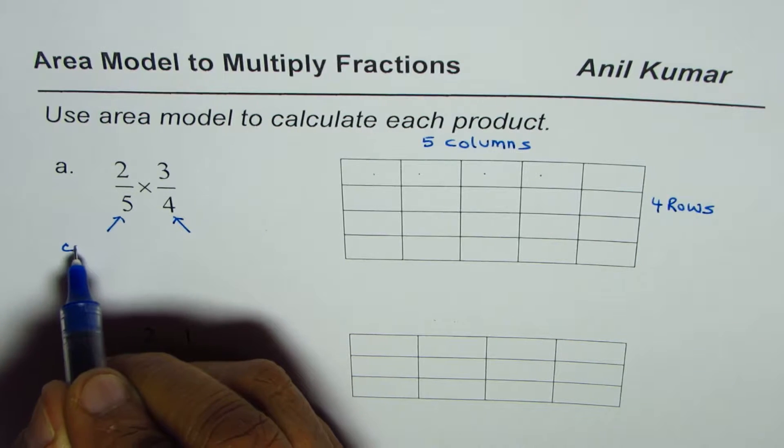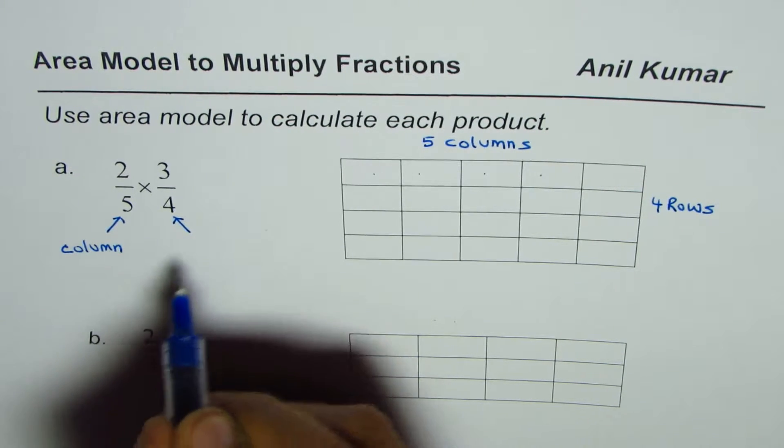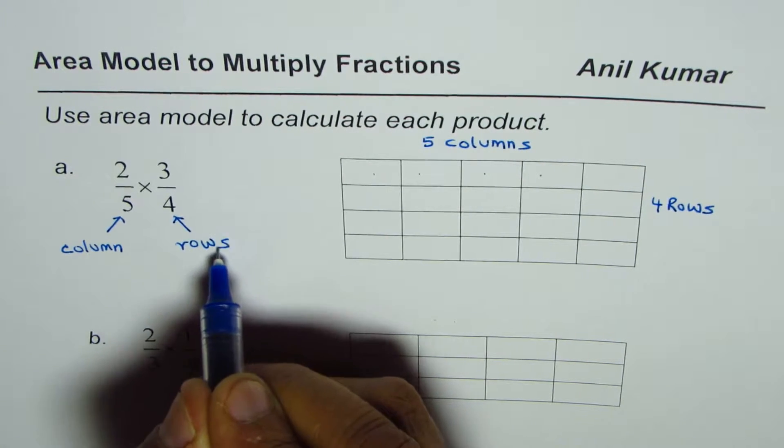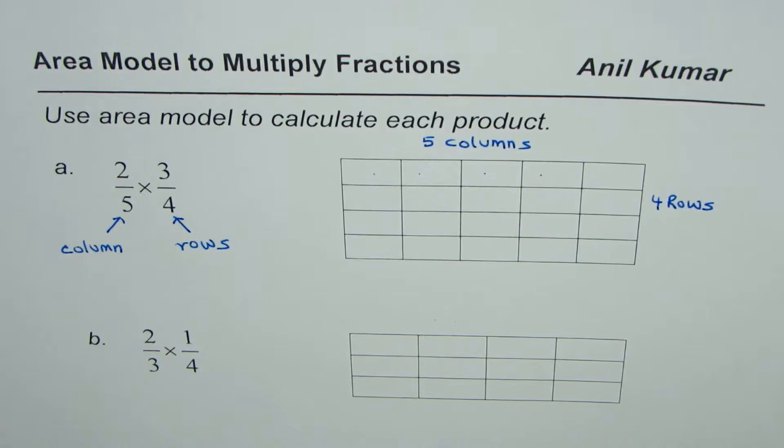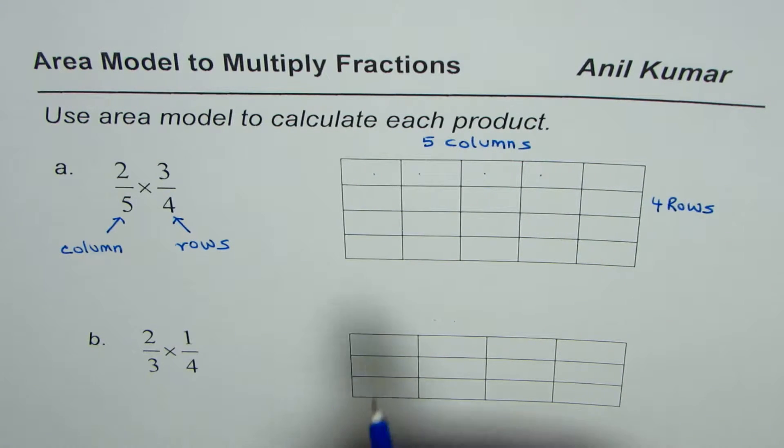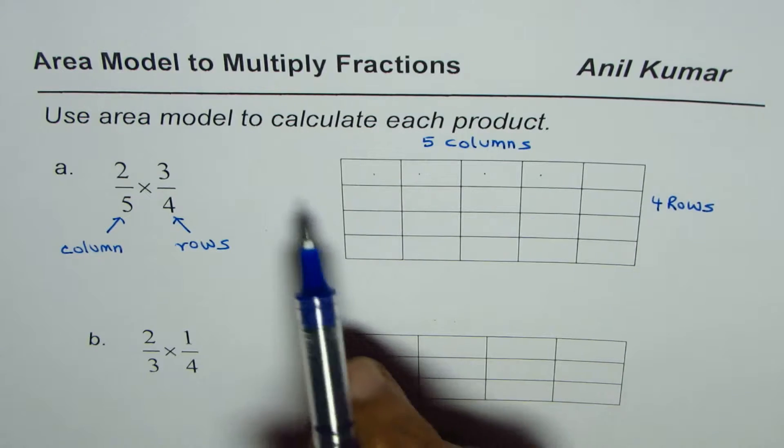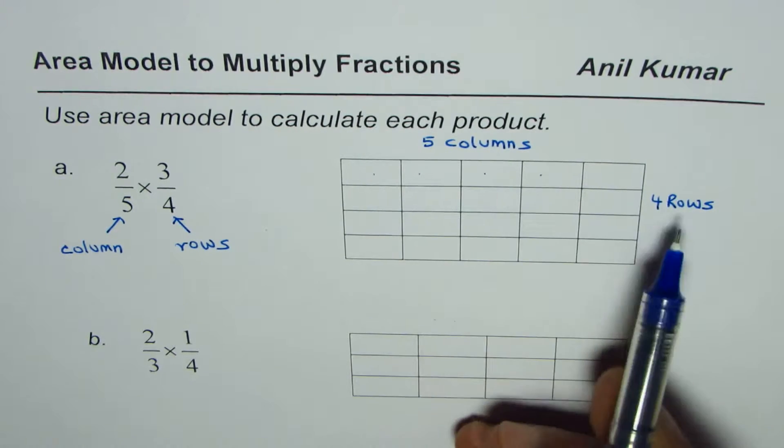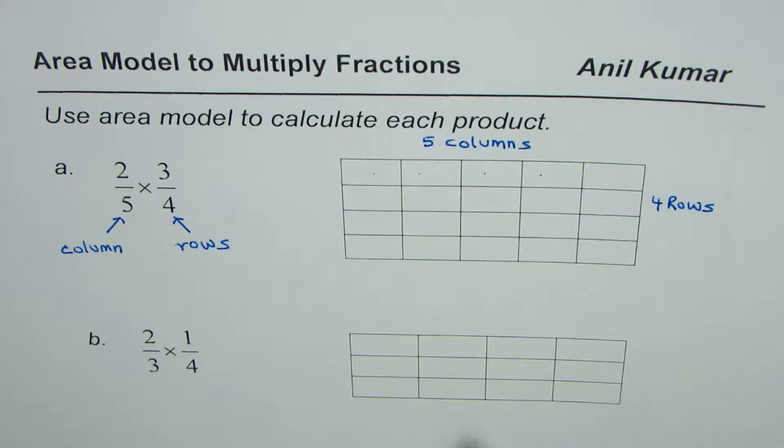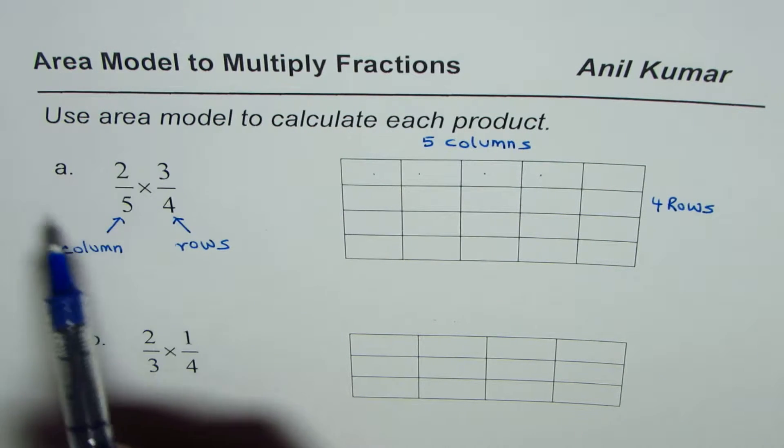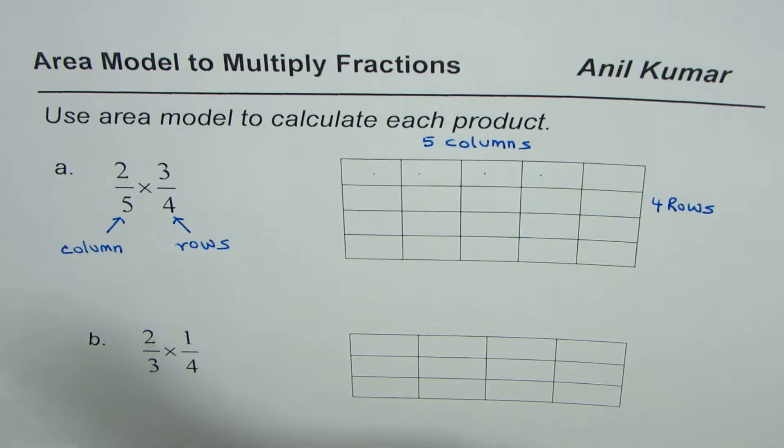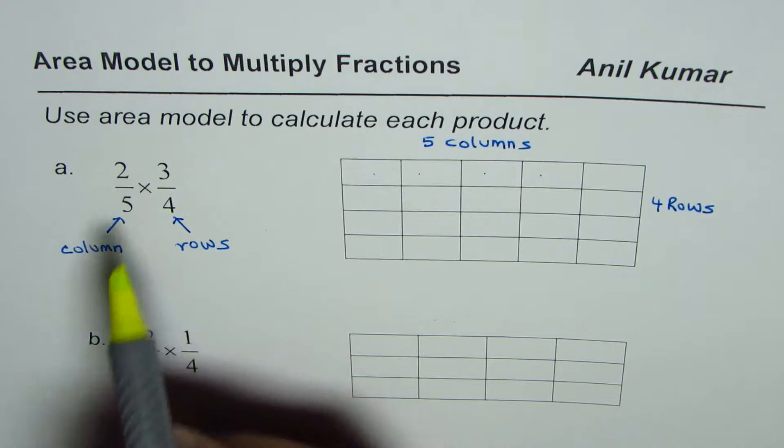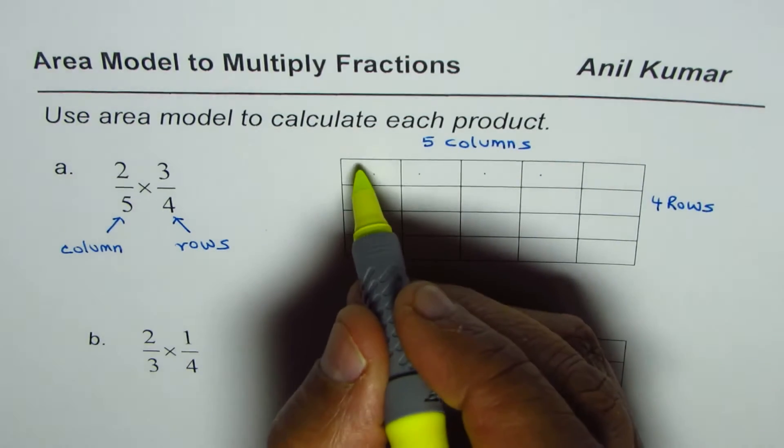We have five columns and four rows. This is because of their denominators, do you see that? So we are trying to multiply columns with rows. While I answer this question I'll make you understand why we are doing like this. We're giving you a rectangle which is already divided into five columns and four rows.